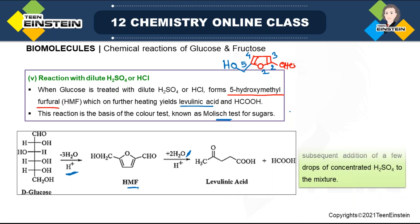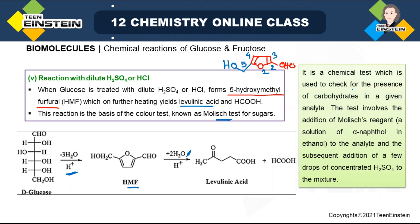The Molisch test is a chemical test used to check for the presence of carbohydrates in a given analyte. If you have an unknown sample and want to check whether it is a carbohydrate, you can use this reaction. For identification tests, there must be a visible change — a color change, gas evolution, or a product with a specific smell. In this case, there is a color change.